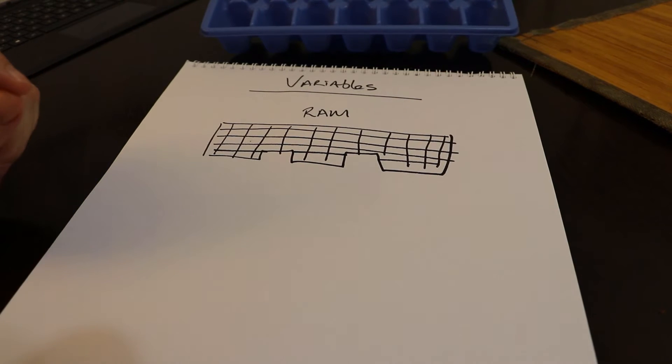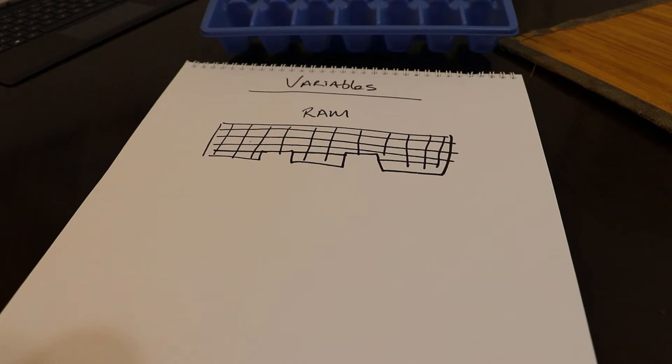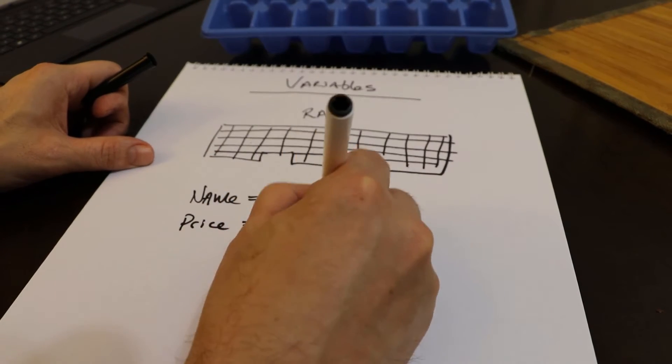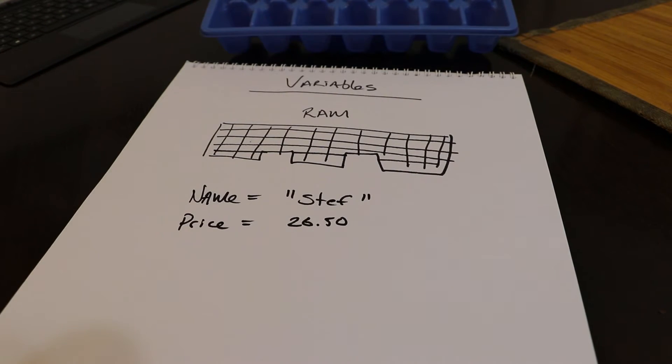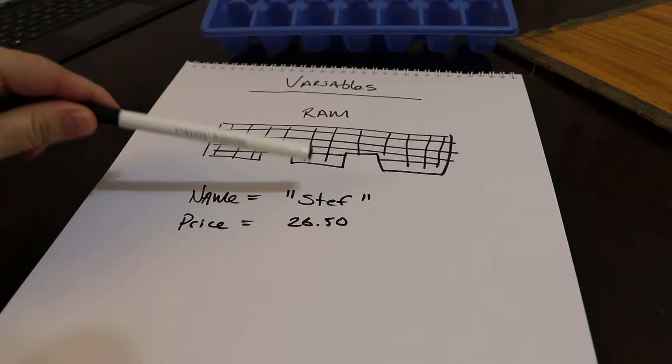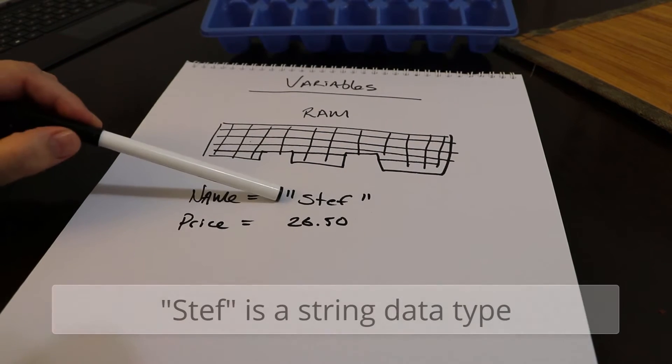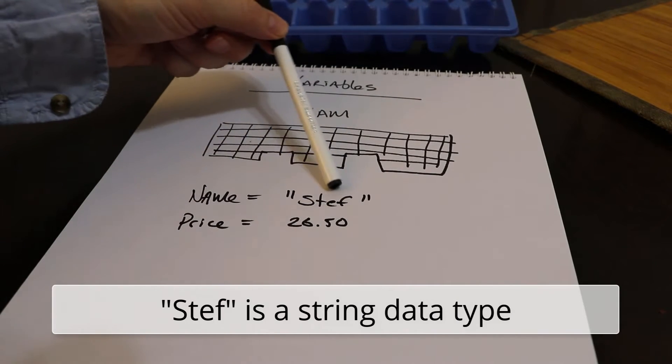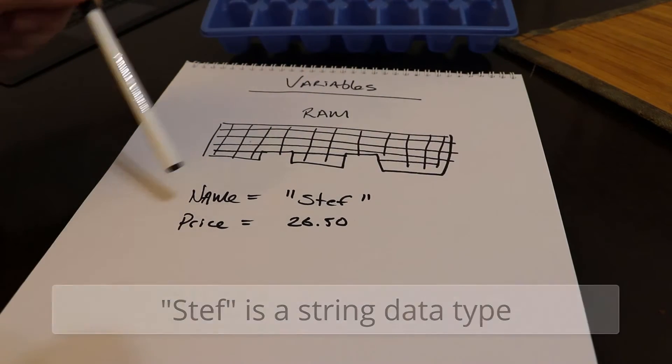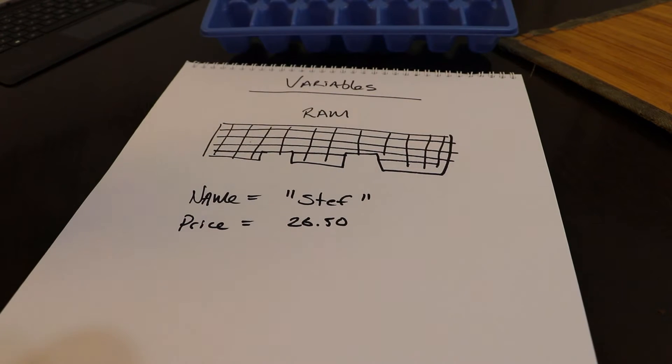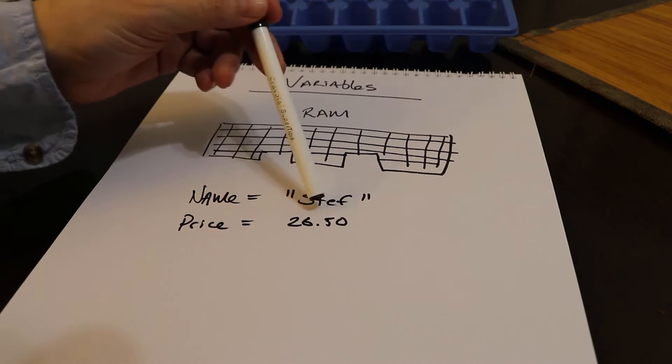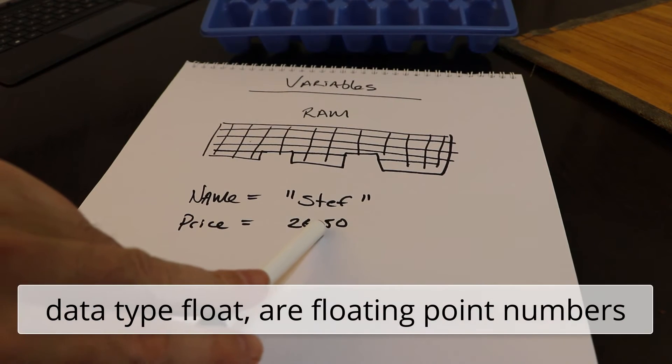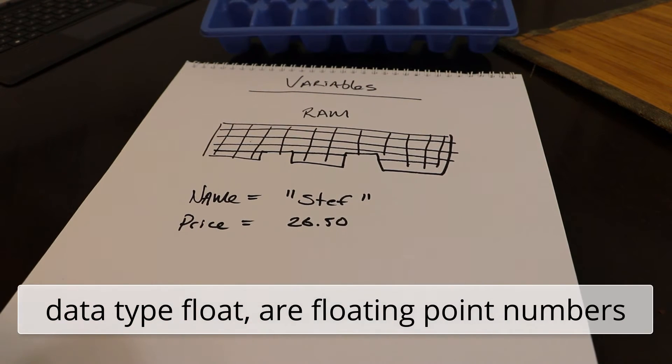Now when you create a variable, for instance, we've got a couple variables here. We've got name, and we know, because we're nerds now, we know that name equals Stefan. You know that Stef is string, it's data type, or it's data of the type string. Price, another variable, and you know that it is of the data type float, because it's a number with a decimal in there. It's a floating point number.